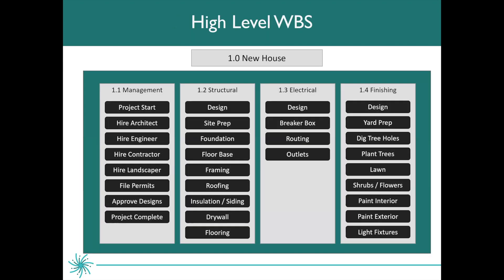Here's a portion of a work breakdown structure for building a new house. New house 1.0 is your level one. 1.1, 1.2, 1.3, and 1.4 are your level two, focusing on management, structural, electrical, and finishing. Below that, you'll see a mix of milestones and tasks. Once you've successfully completed this step, you are now ready to move on to sequencing the activities.